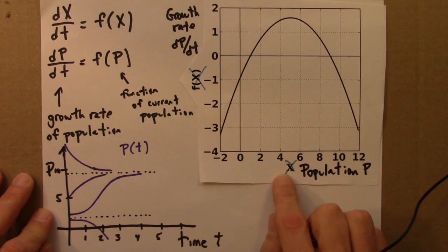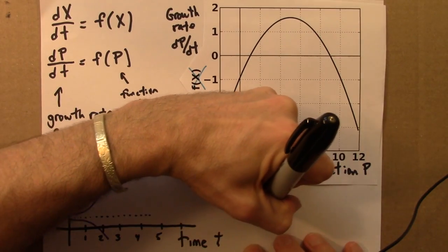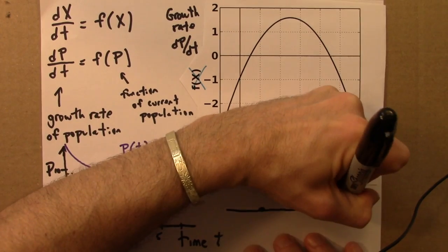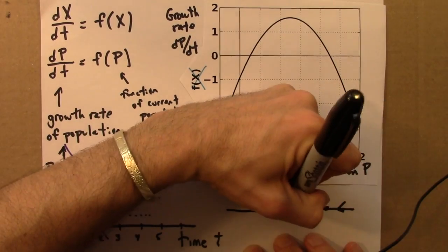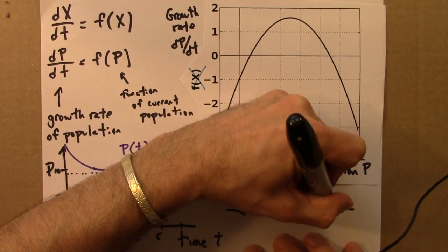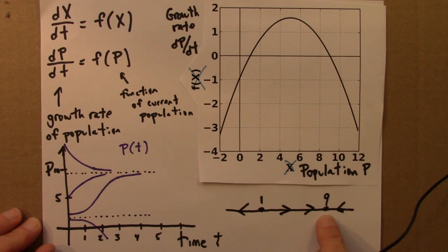And if you do that, again, we can see that there's a stable fixed point at 9, and an unstable fixed point at 1. And, in fact, you could draw the phase line right here on this axis if you wanted.